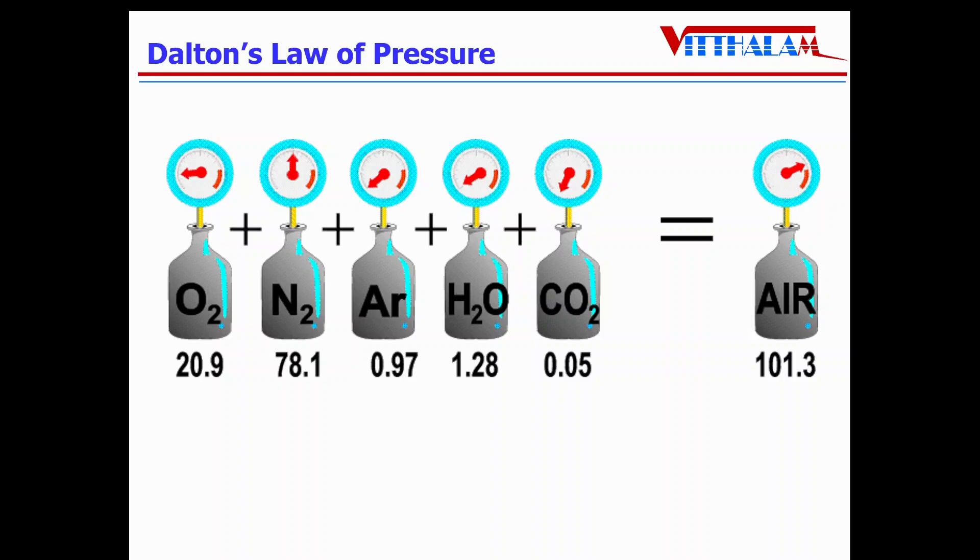Here in our case, atmospheric air, which is a mixture of dry air and water vapor. However, dry air, as I said, consists of different gases like oxygen, nitrogen, argon, carbon dioxide, etc. The total pressure of atmospheric air is equal to the sum of partial pressures of these gases.